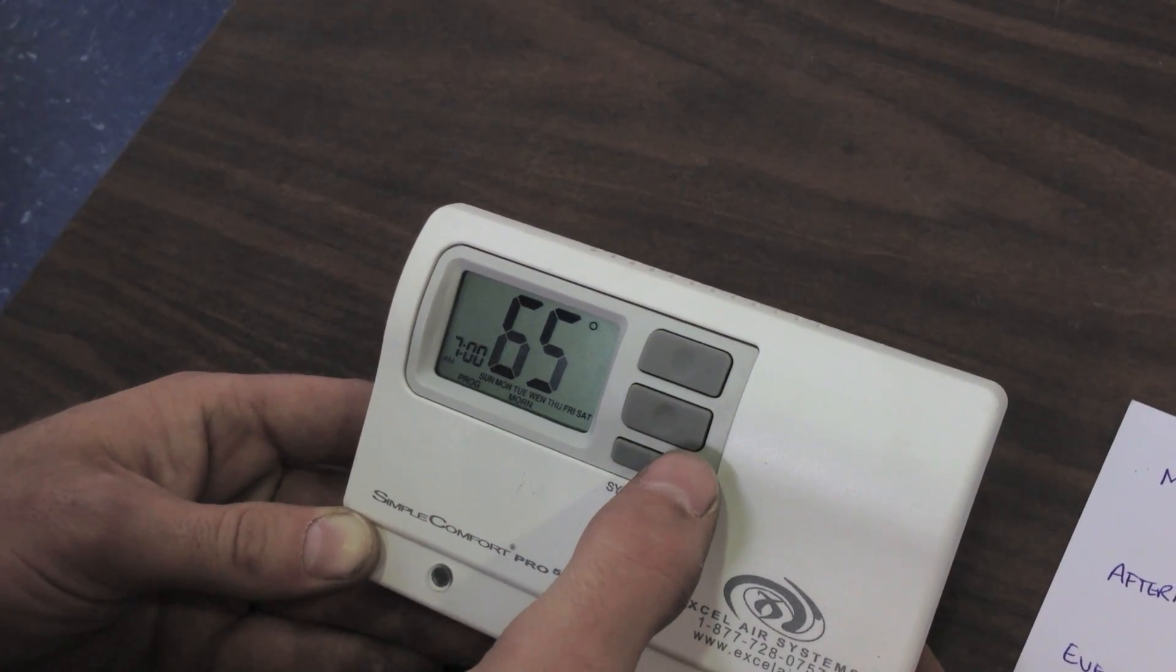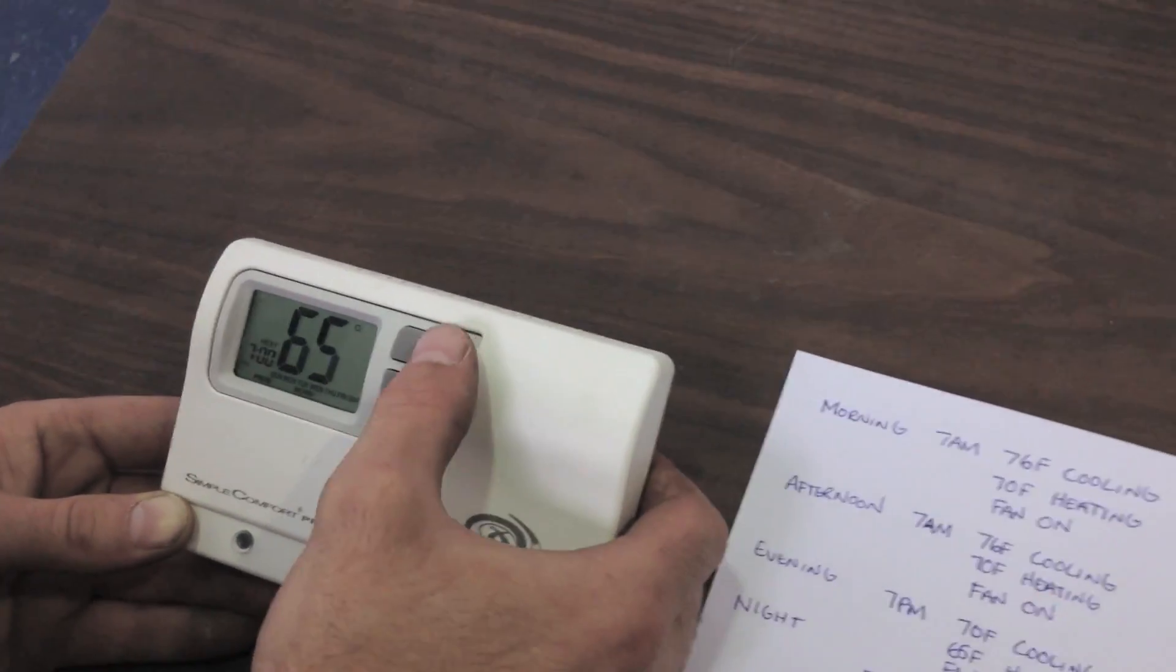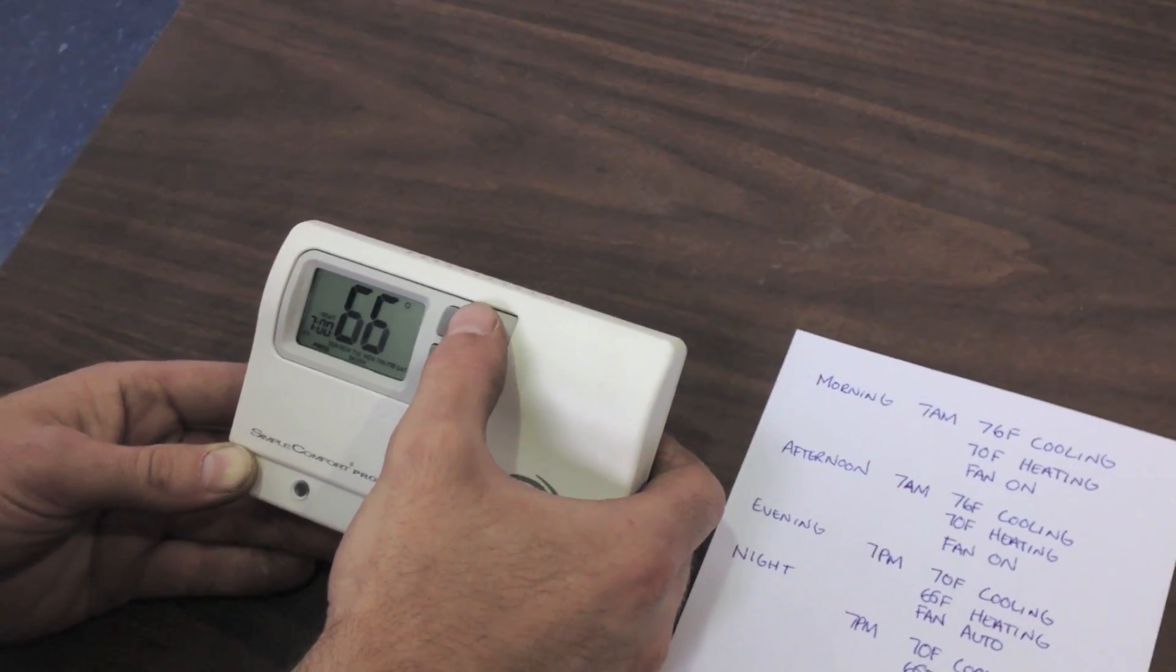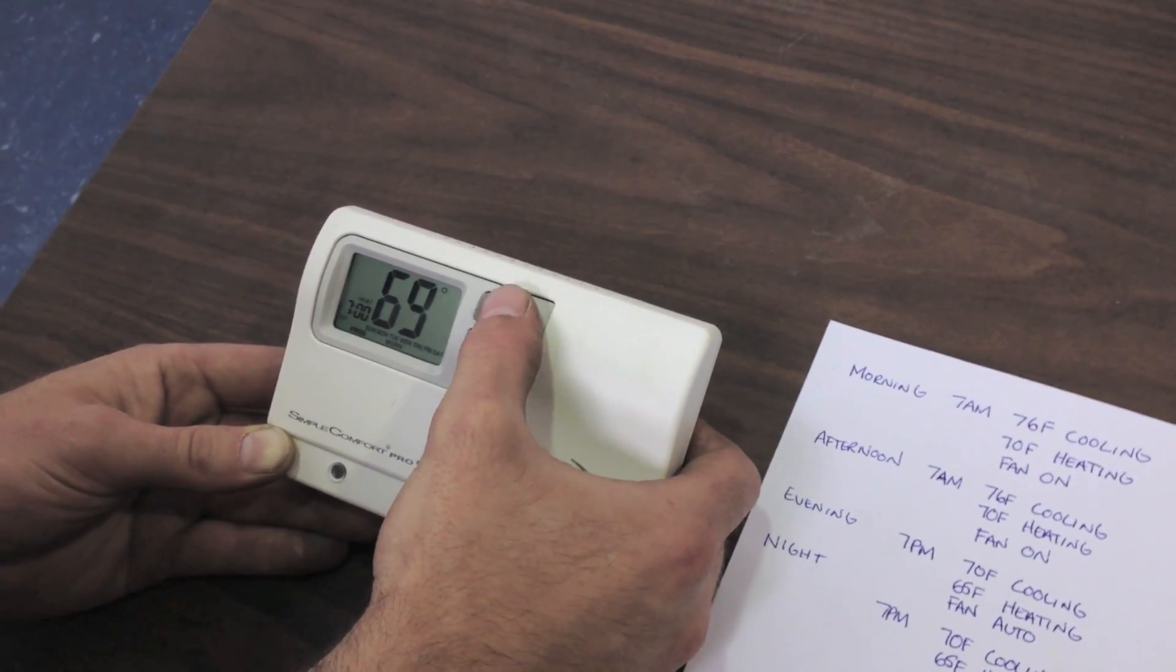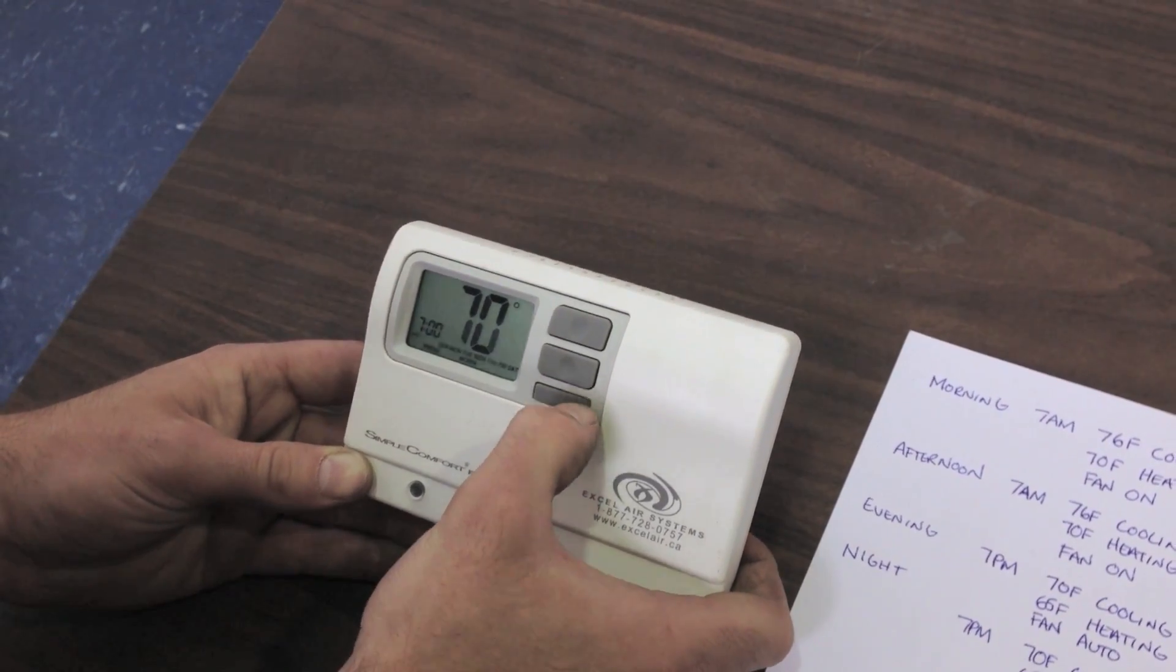Now our heat display is set. I wrote down 70 degrees Fahrenheit for our heat, for our on cycle. So we're going to push our up arrow and set it to 70 degrees. Once you have it set to your heat temperature, push fan.